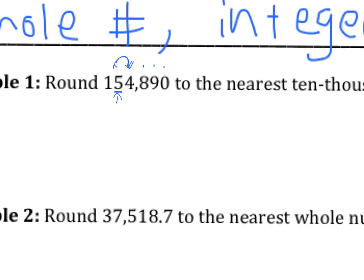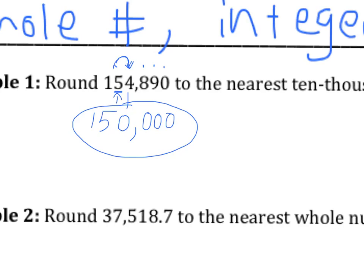In this case, underline the place value, draw an arrow next door, ask the number — are you bigger than four? The number says no, so it don't grow. So the five stays the same, it doesn't grow. Everything after becomes zero, so that four becomes a zero. Keep the comma — everything after becomes zero. So this number rounded to the nearest 10,000 is 150,000. And we should always double check: the original number is 154,890 — is 150,000 close to that? Yes, it's pretty close.